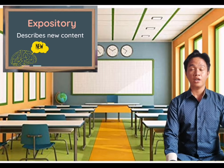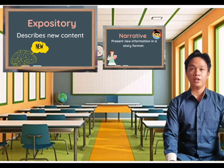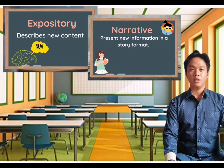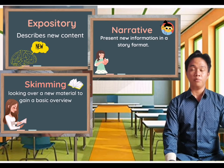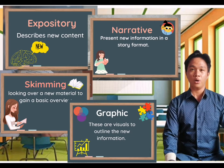The first type is expository, which describes new content. Second is narrative, which presents new information in a story format. Third is skimming, which involves looking over new material to gain a basic overview. Lastly is graphic — these are visuals used to outline new information, and may include pictographs, conceptual patterns, and concept maps.